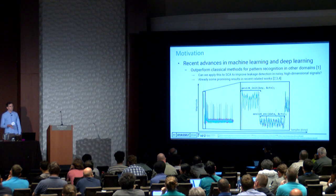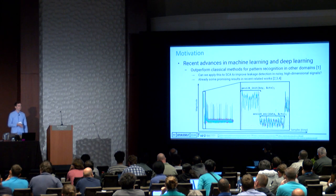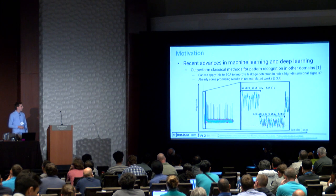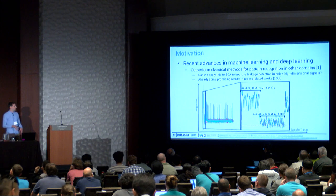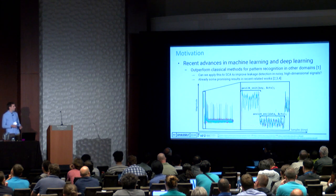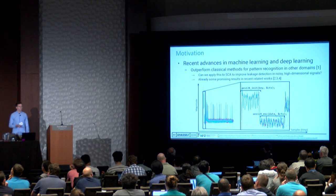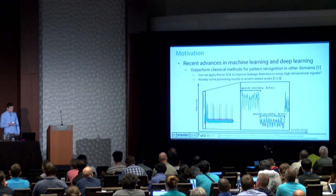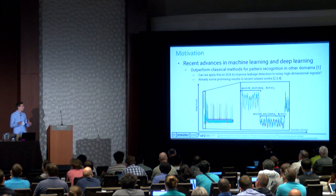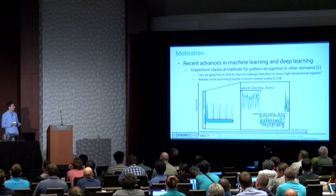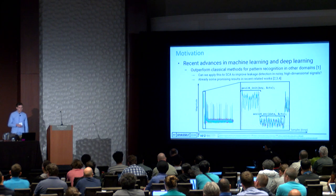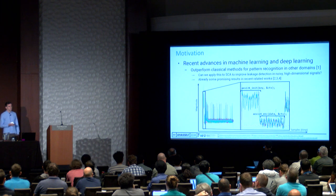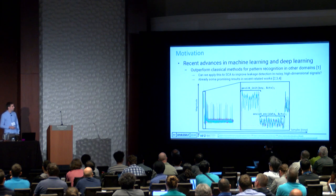The motivation for this work comes from recent advances in machine learning and deep learning. Looking at a review paper by Jan LeCun, one of the principal authors of the machine learning domain, we can see that ML and deep learning algorithms consistently outperform classical methods in pattern recognition—for example, face recognition or handwriting recognition. If we consider side channel analysis as a kind of pattern recognition problem, the question is: can we apply this to side channel analysis and achieve very good performance? There are already some promising results in recent related work, referenced at the bottom of the slide.